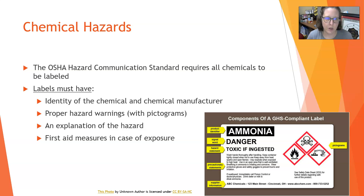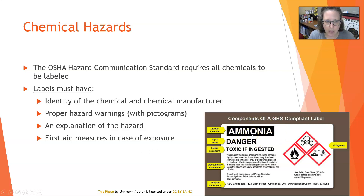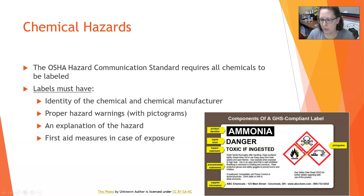Let's start with chemical hazards. The OSHA Hazard Communication Standard requires that all chemicals be labeled. The labels have to have the identity of the chemical and the chemical manufacturer, a proper hazard warning with pictograms. For example, it says 'Danger' as a signal word, and then it has a hazard statement — 'toxic if ingested' — and pictograms in case somebody who picks it up doesn't know how to read.